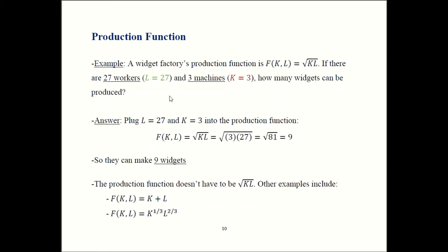Let's go over the answer. L is labor — that's how many workers you have — and our problem said we had 27 of them. K is capital, how many machines we have, so K equals 3. Plug L equals 27 and K equals 3 into the function: square root of 3 times 27. 3 times 27 is 81. Square root of 81 is 9. So the firm can make 9 widgets if they have 27 workers and 3 machines.